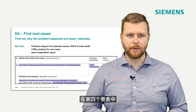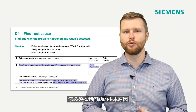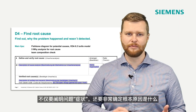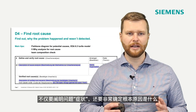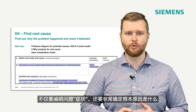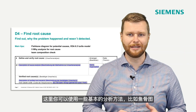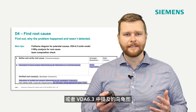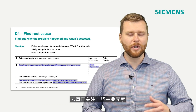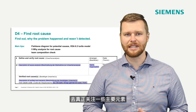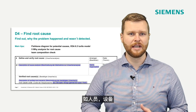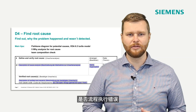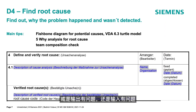In discipline number four, you have to really find the root cause of the problem — not only define the symptoms, but be very sure about what the root cause is. For this you can use some basic methods like Ishikawa or the turtle model from VDA 6.3, and really focus on main elements like people, machines, whether the procedure was done wrong, what the problem from the output or input was, and really find the root cause.